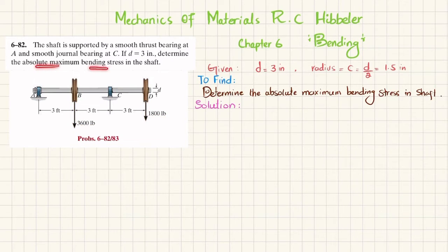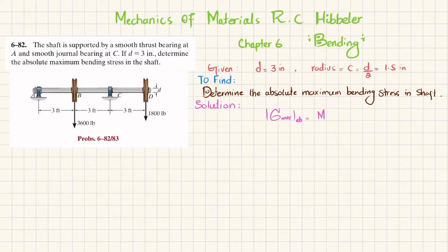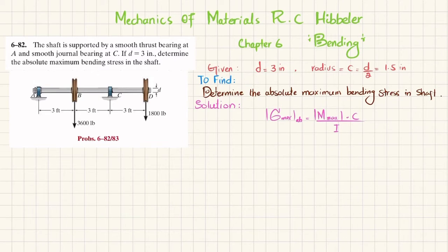We need to determine the absolute maximum bending stress in the shaft. We know that the absolute maximum bending stress is equal to the absolute value of the maximum bending moment multiplied by c — the distance from the neutral axis to the outermost fiber, which is the radius — divided by I. We will find this maximum bending moment using the shear force and bending moment diagram. Let's start with the solution.